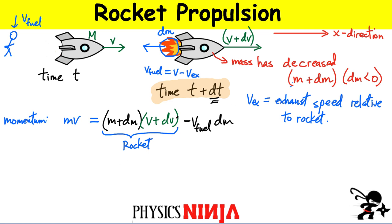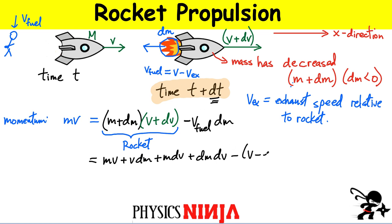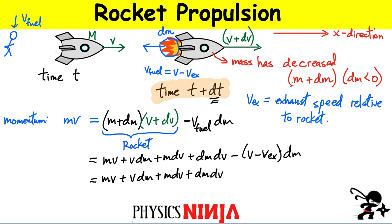Now we have to do a little bit of math. We multiply through and eliminate the brackets, giving four terms: mv, v·dm, m·dv, and dm·dv. Then I introduce the velocity of the fuel: v_fuel equals the velocity of the rocket minus the exhaust speed, all multiplied by that element of mass. Carrying this out, we get minus v·dm, and both of those terms turn into a positive exhaust speed multiplied by that element of mass. On this side I still have mv, which was my initial momentum.